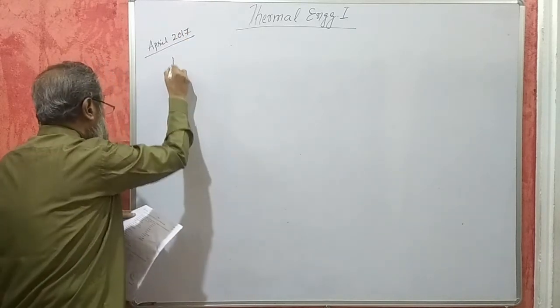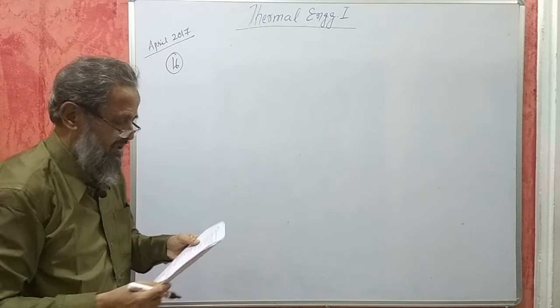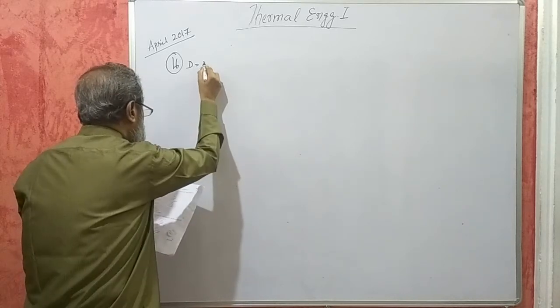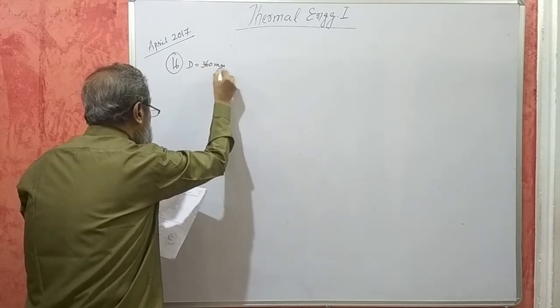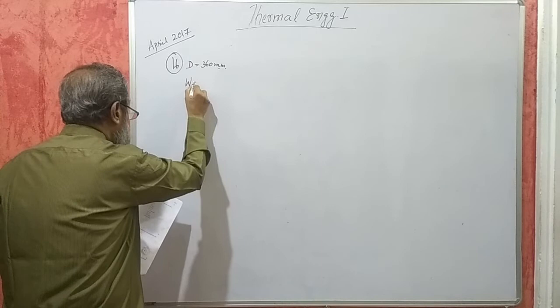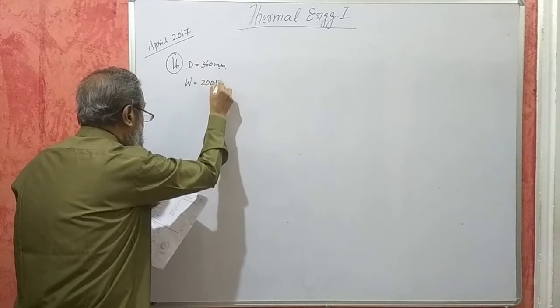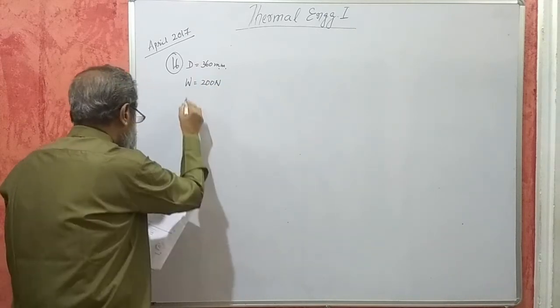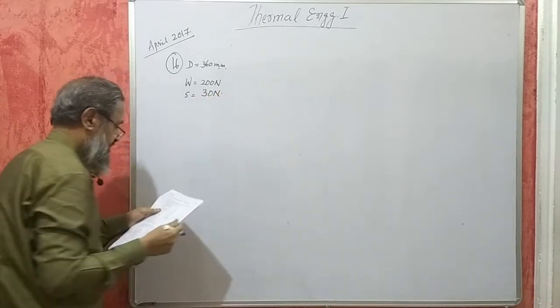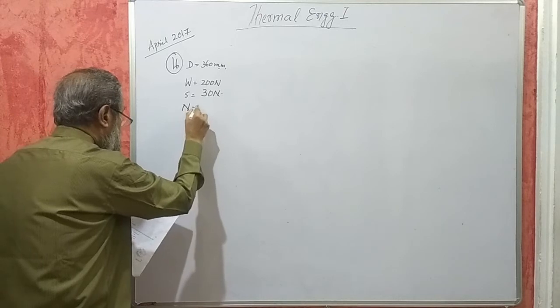Question number 16. Effective diameter of the brake wheel, capital D, is 360 mm. Dead load W on the brake is 200 newton. Spring balance reading S is 30 newton.